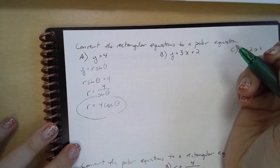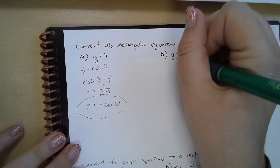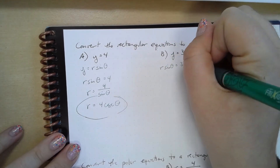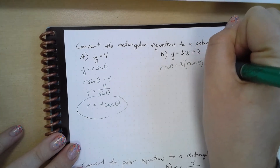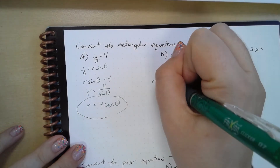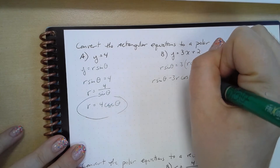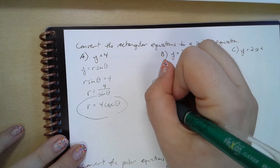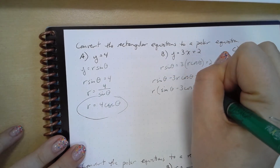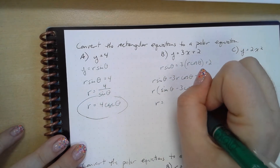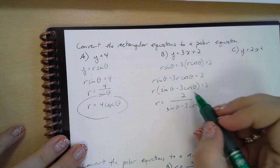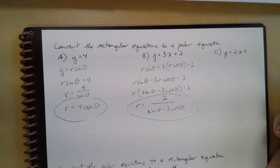What about y = 3x + 2? We replace y with r sin(θ) and x with r cos(θ), giving us r sin(θ) = 3r cos(θ) + 2. Rearranging: r sin(θ) − 3r cos(θ) = 2. Factoring out r: r(sin θ − 3 cos θ) = 2. So r = 2 / (sin θ − 3 cos θ).